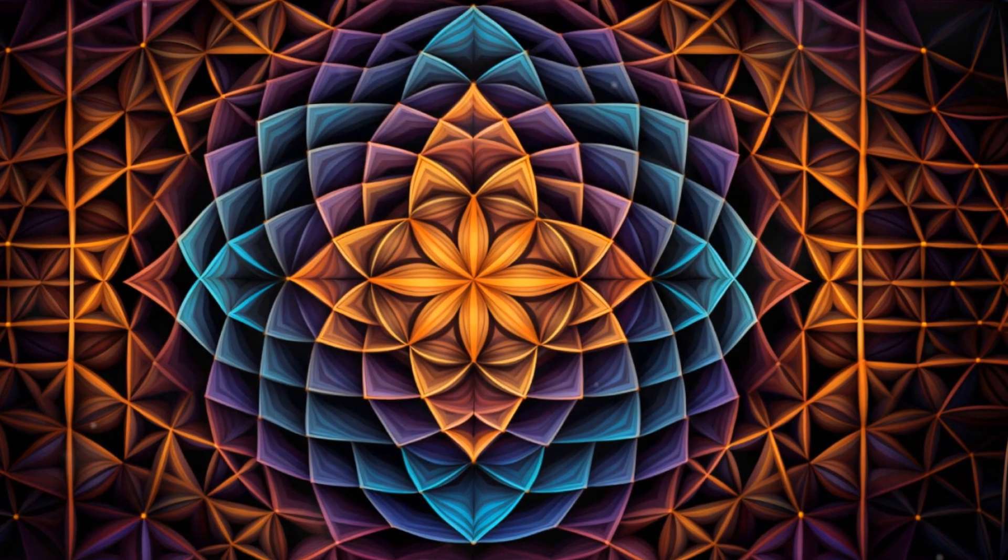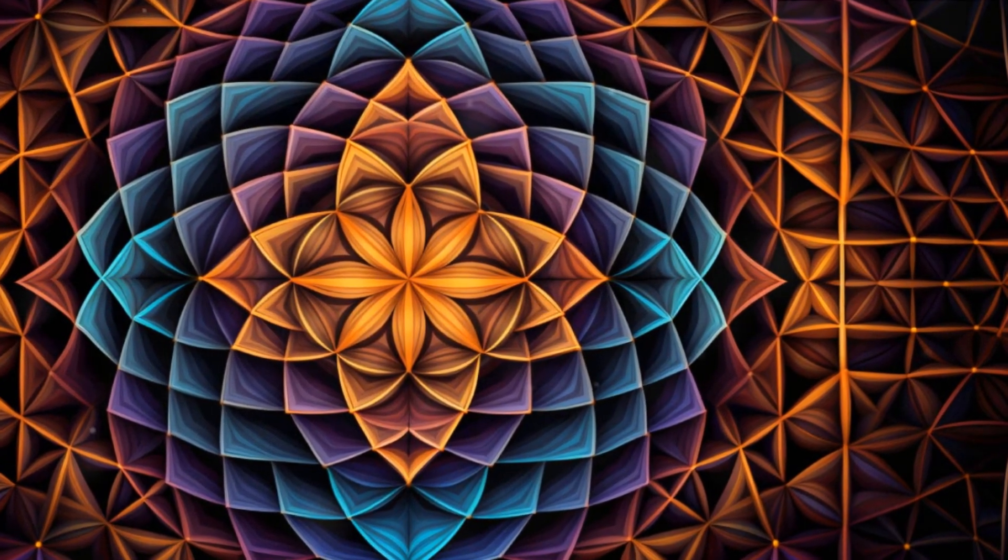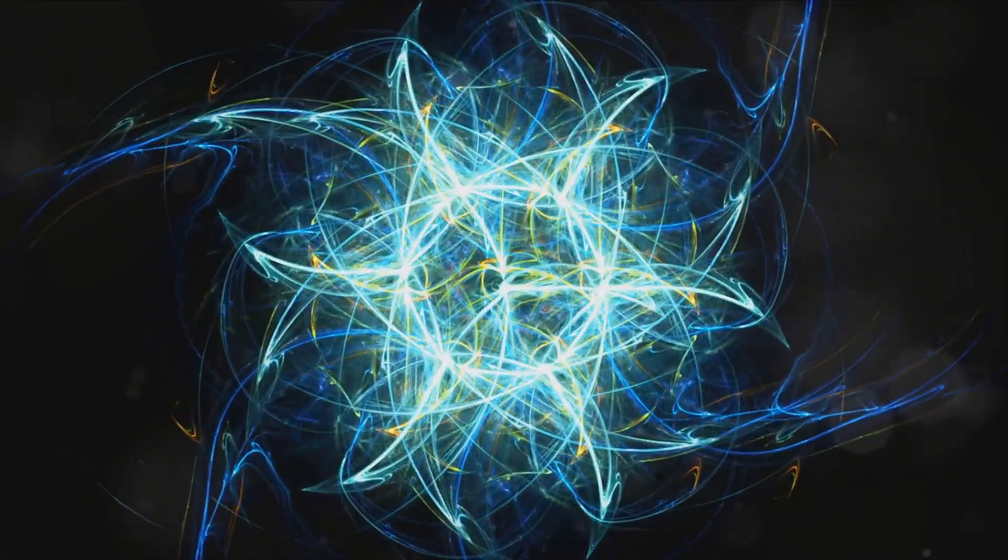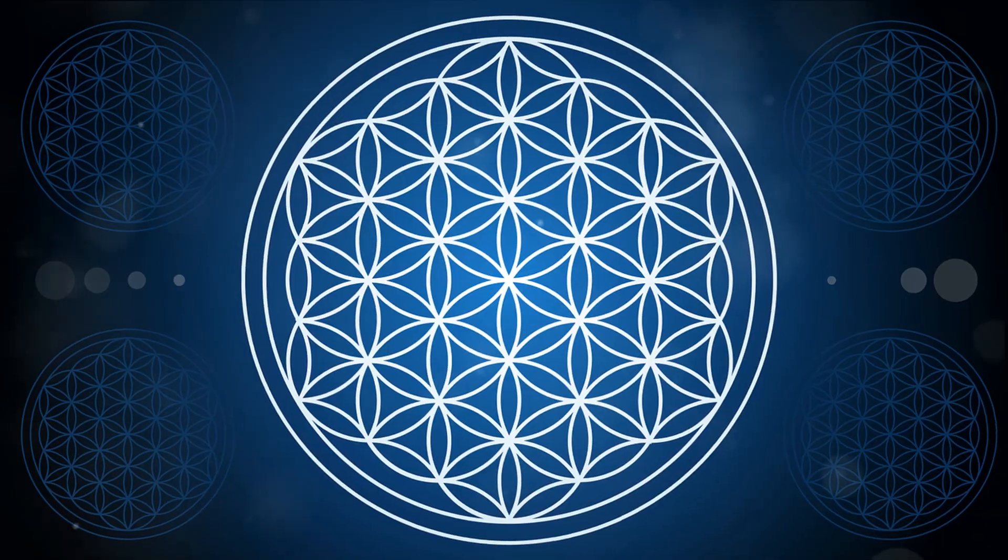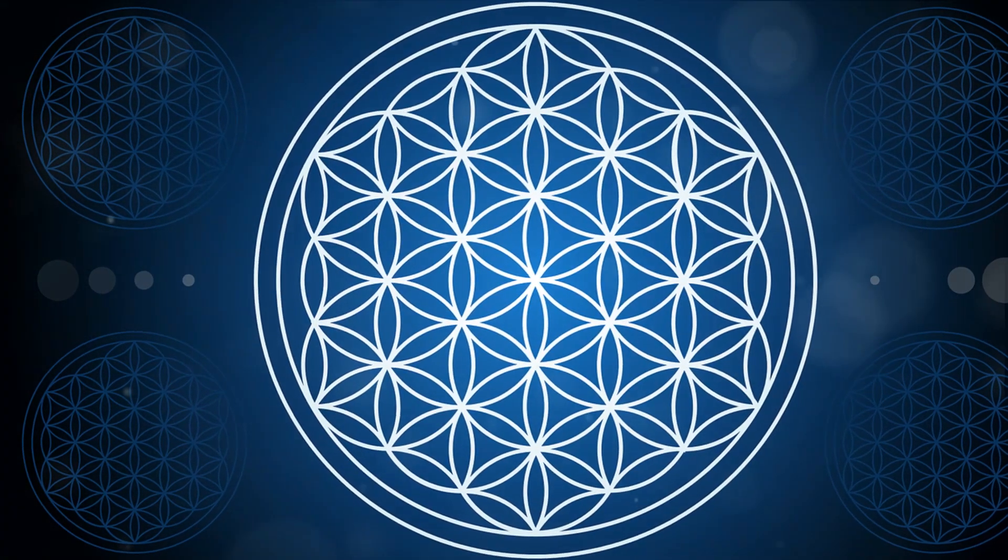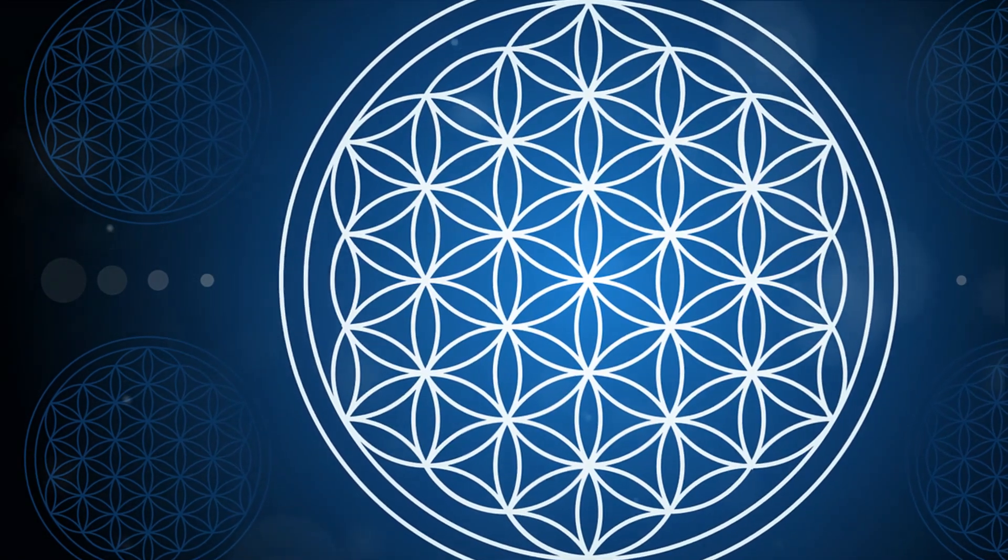Sacred geometry is often associated with concepts such as harmony, balance, order, and interconnectedness. It emphasizes the belief that there is a fundamental harmony and coherence in the structure of the universe, and that understanding and aligning with these geometric patterns can bring about a sense of spiritual awakening and enlightenment.